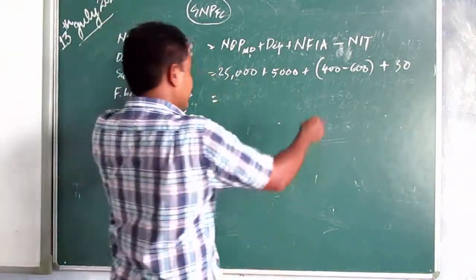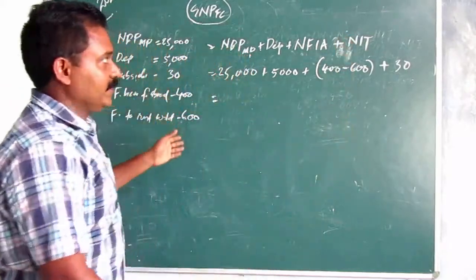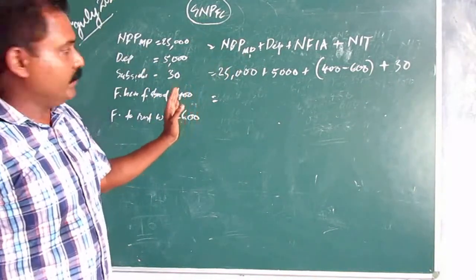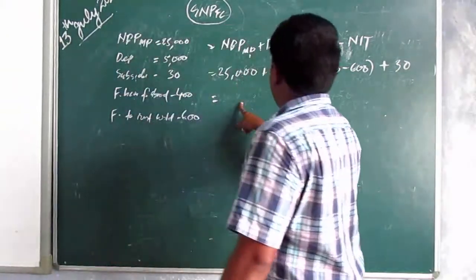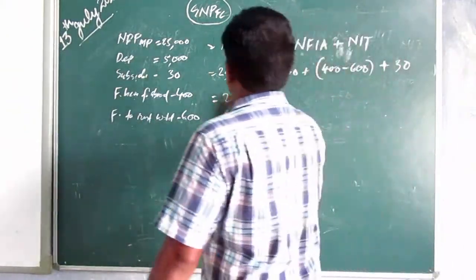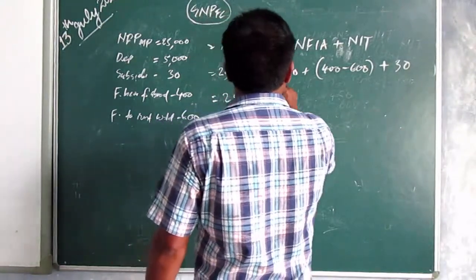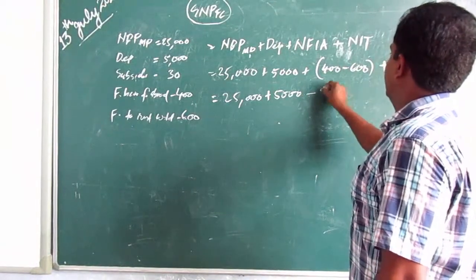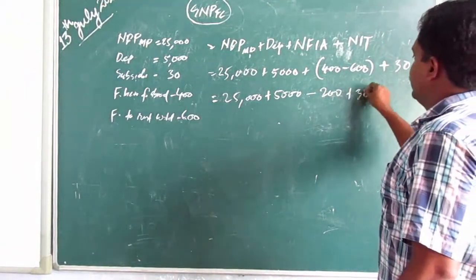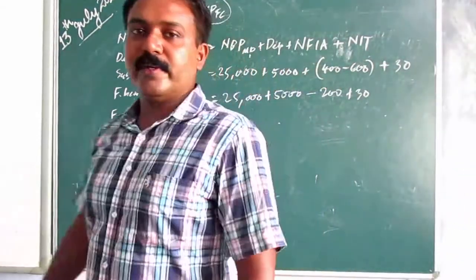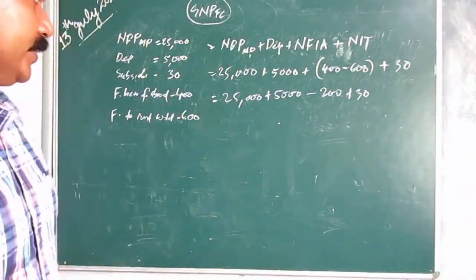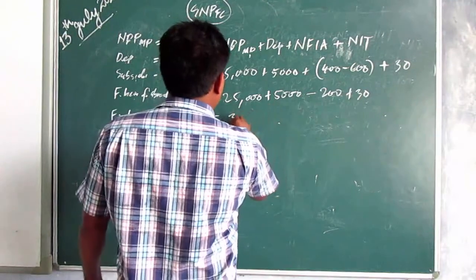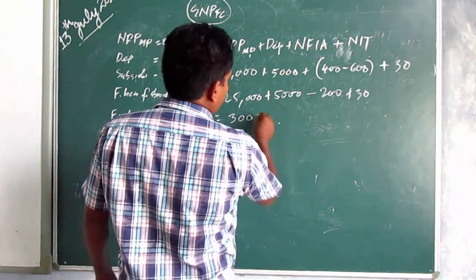You know India's condition — factor income paid abroad is always more, so NFIA will always be negative for India because our imports are more than exports. Now NIT means net indirect tax = indirect tax minus subsidies. Subsidies here are 30 — so they get added back. The indirect tax of 100 gets minused. Following BODMAS: first addition then subtraction.